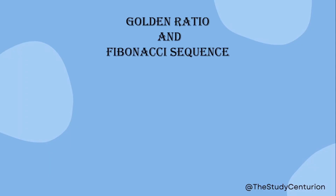The next heading is the Golden Ratio and Fibonacci sequence. What is the Golden Ratio? It has a historical origin going back to around 300 BC — that is the golden ratio concept from Euclid. Euclid's Elements introduced the golden ratio concept, and it is an interesting and very vast topic.